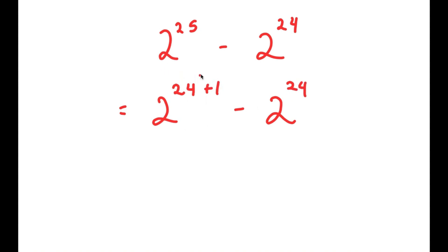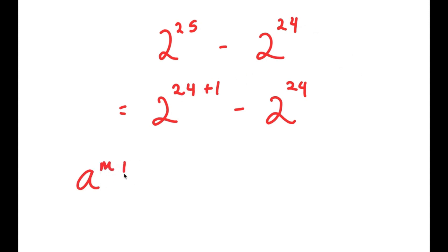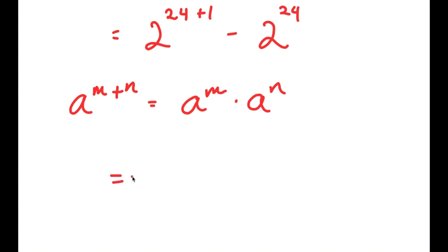The reason I did this is because we want both terms to share 2^24. The best way to change 2^25 into something times 2^24 is to rewrite it as 2^(24+1). Now I can use the property a^(m+n) = a^m · a^n, so 2^(24+1) turns into 2^24 times 2^1.